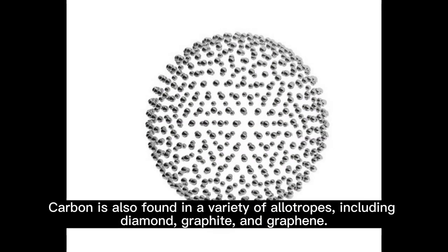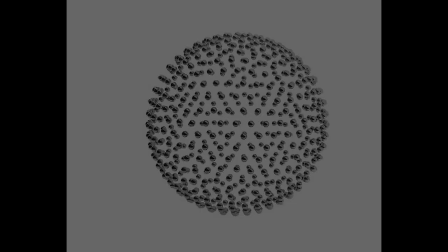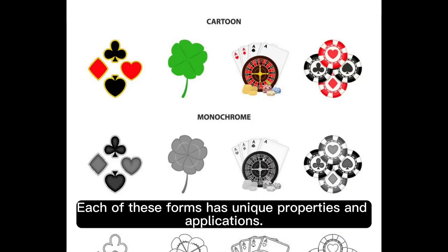Carbon is also found in a variety of allotropes, including diamond, graphite, and graphene. Each of these forms has unique properties and applications.